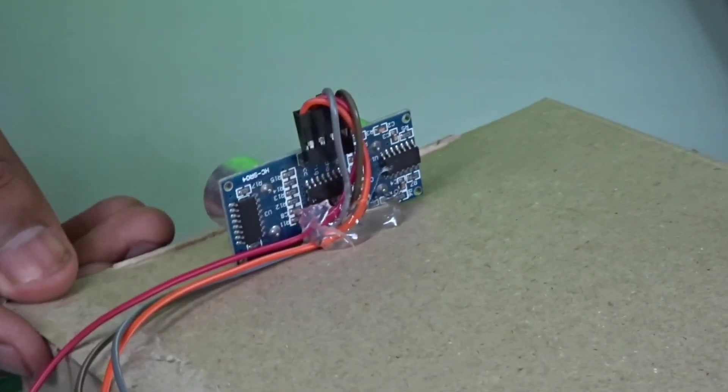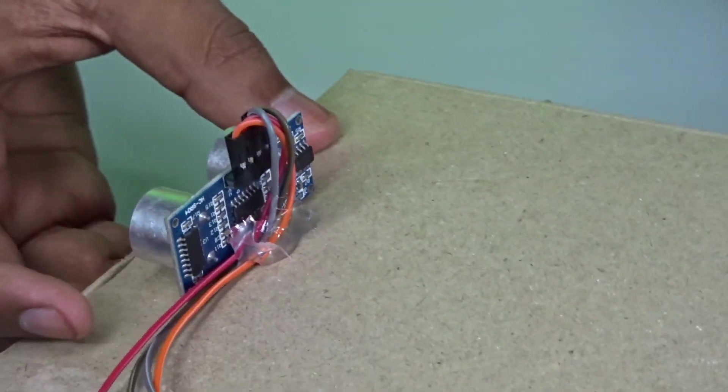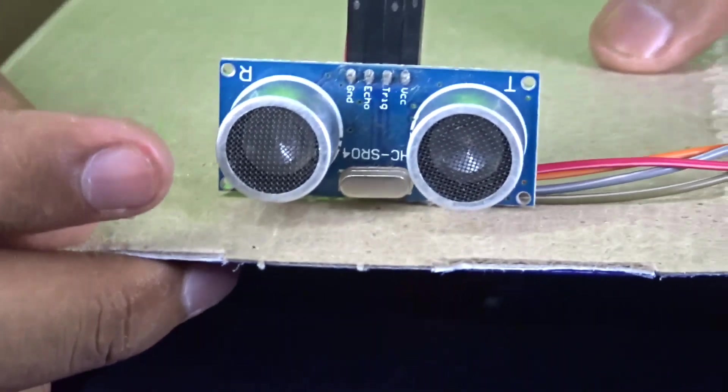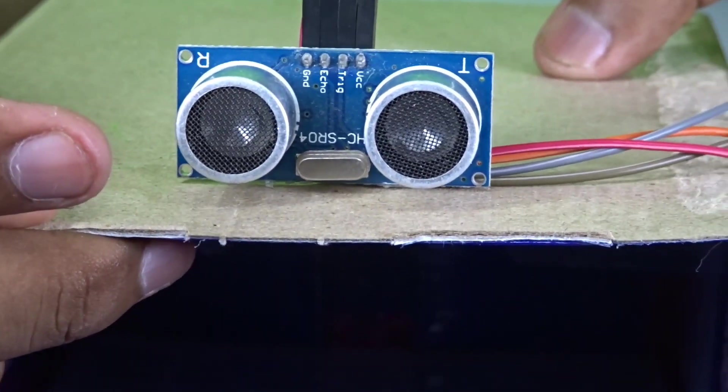So it was really a pain so I had to do it off camera. So now as you can see the orange wire connected to the sonar sensor is the VCC. The red is the trigger, the gray is the echo and the brown is the ground.